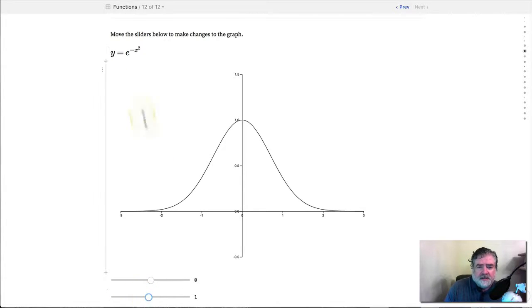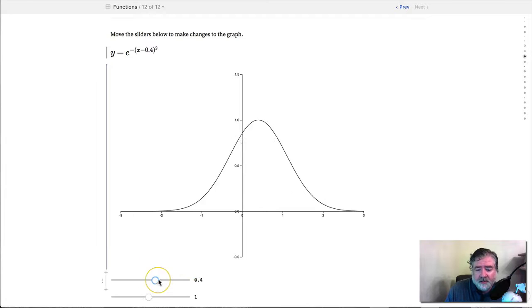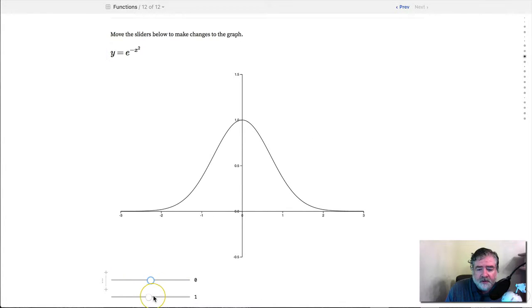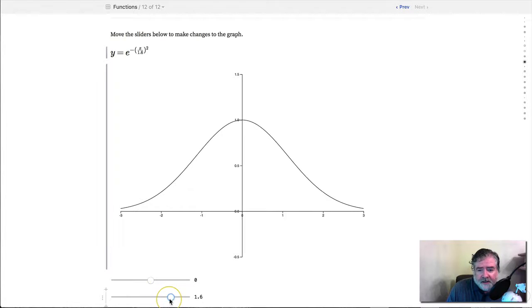And this is not exactly the density of a normal distribution because there's some constants missing. But essentially, what's happening here is what happens when you adjust the mean. The mean shifts the curve back and forth, and when you adjust the standard deviation, it changes the size or the width of the curve.